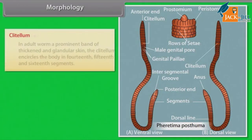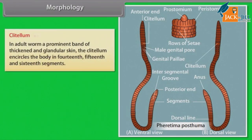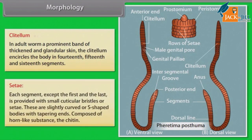In adult worms, a prominent band of thickened and glandular skin called the clitellum encircles the body in the 14th, 15th, and 16th segments. Each segment, except the first and the last, is provided with small cuticular bristles or setae. These are slightly curved, S-shaped bodies with tapering ends, composed of a horn-like substance called chitin.